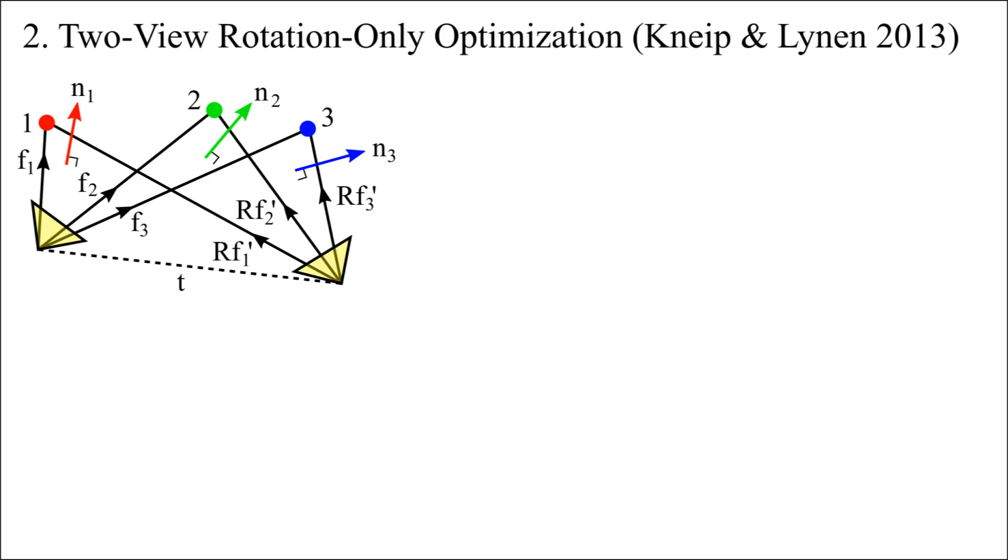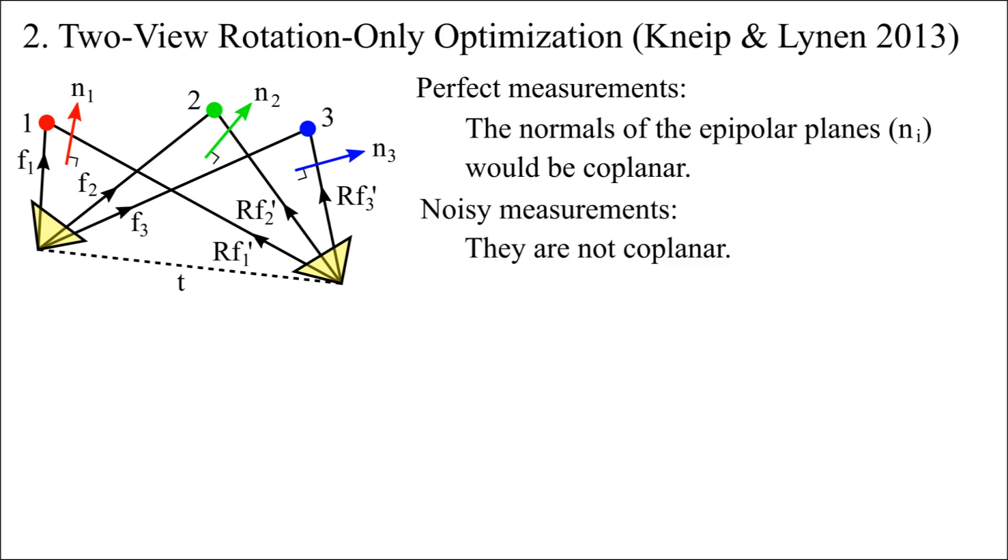This figure shows three epipolar planes with normal vectors N1, N2, and N3. If all measurements were perfectly accurate, the normals of the epipolar planes would be coplanar, because they are all perpendicular to the translation vector T. In practice, this does not happen due to noise.